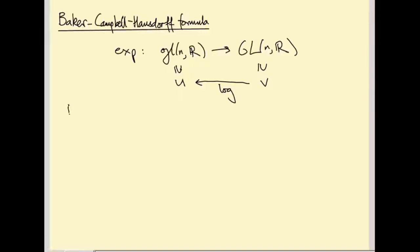The useful thing that we wrote down at the end of the last lecture was a power series expansion of log. So it was log of the identity plus X equals X minus a half X squared plus a third X cubed, etc. The point is anything inside V can be written as identity plus a little bit, because V is a neighborhood of the identity.